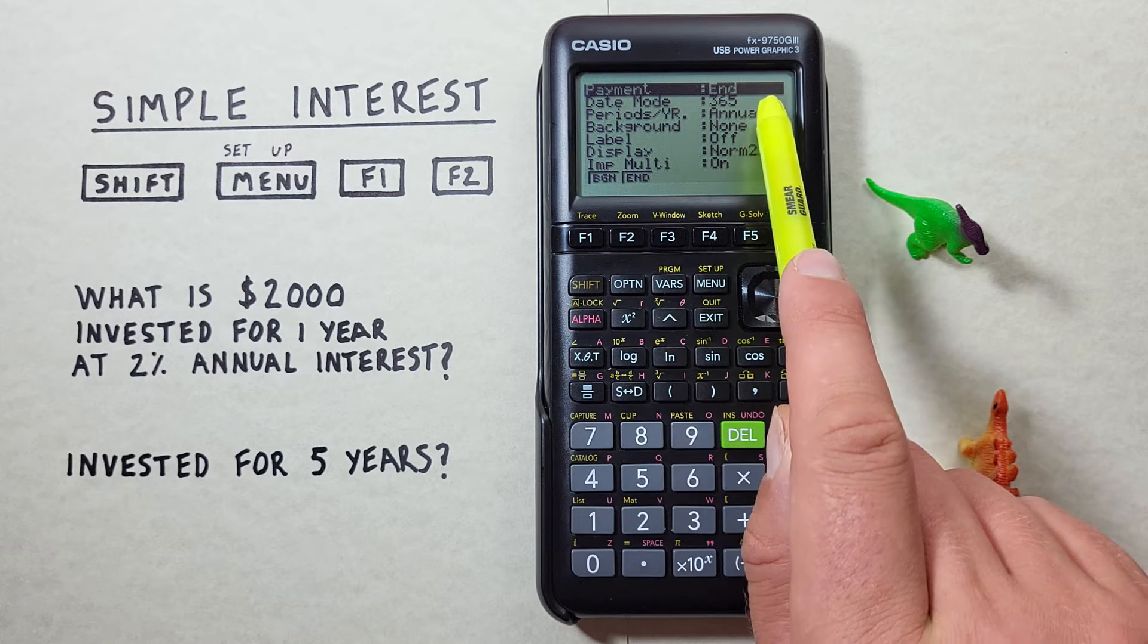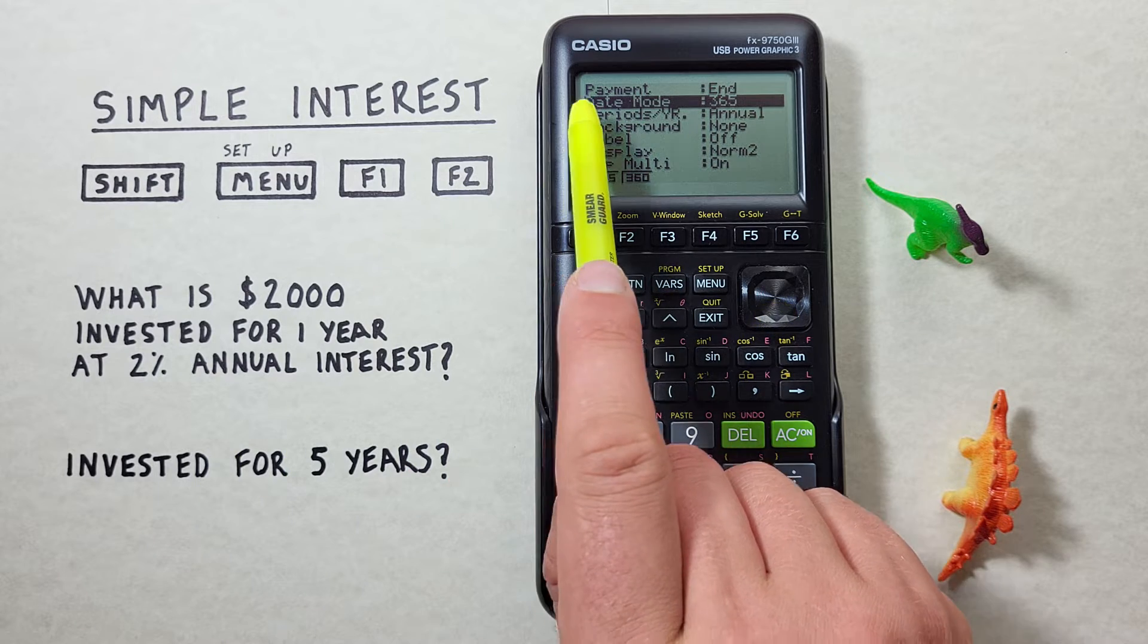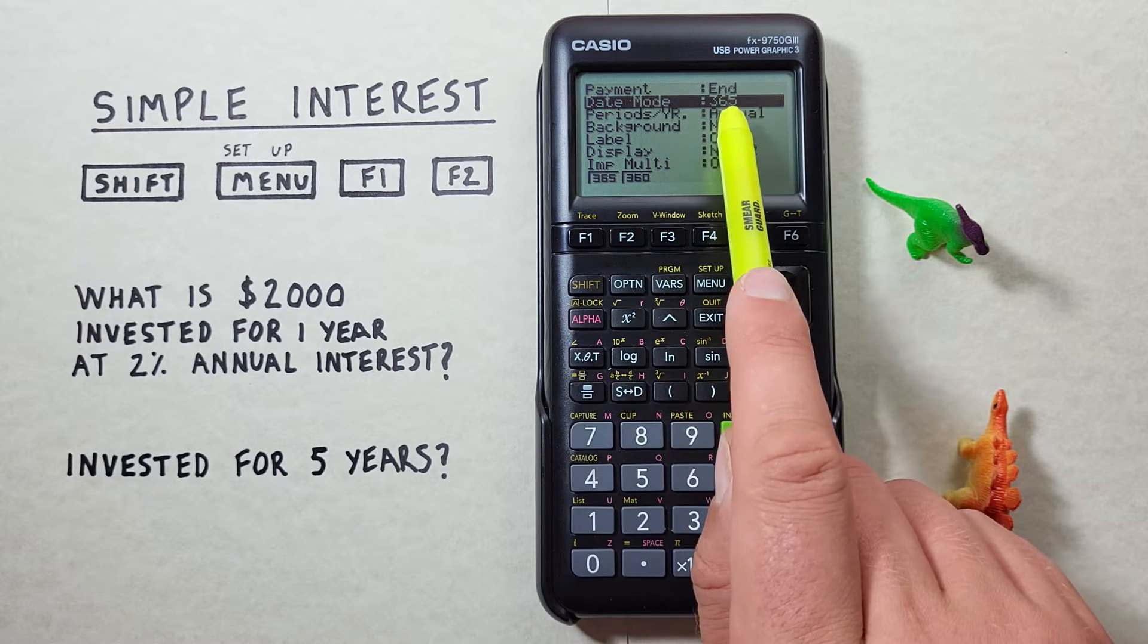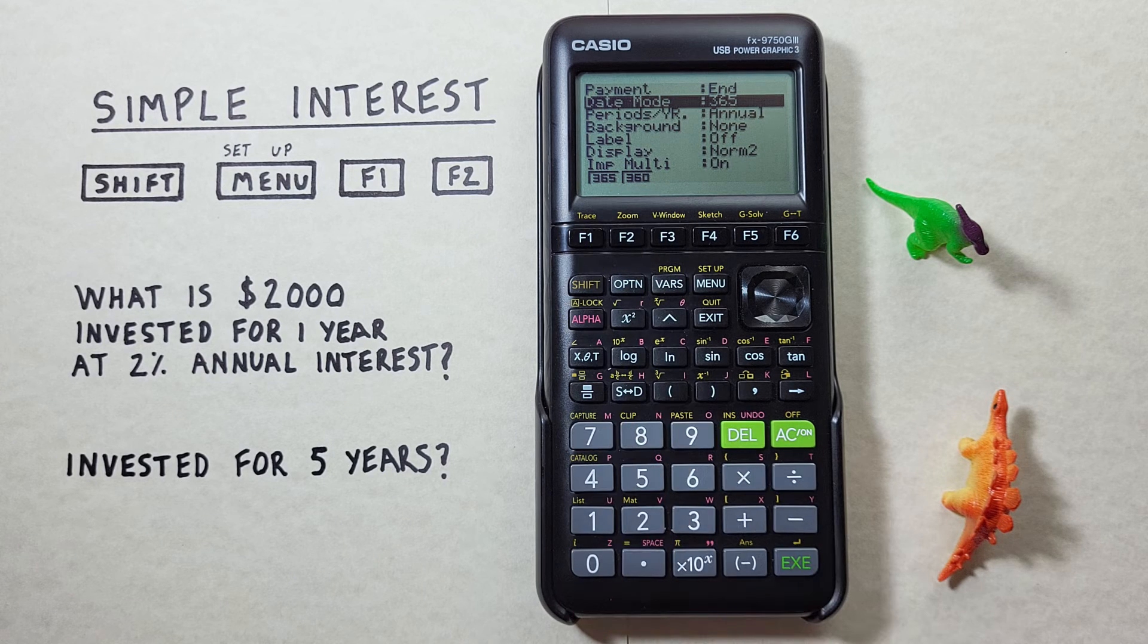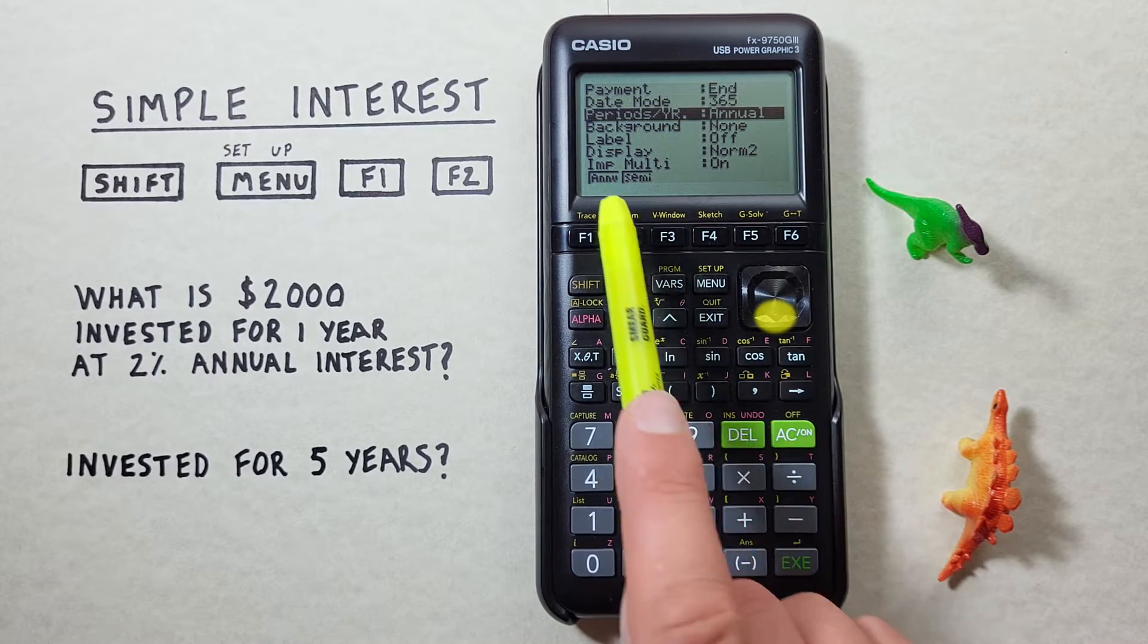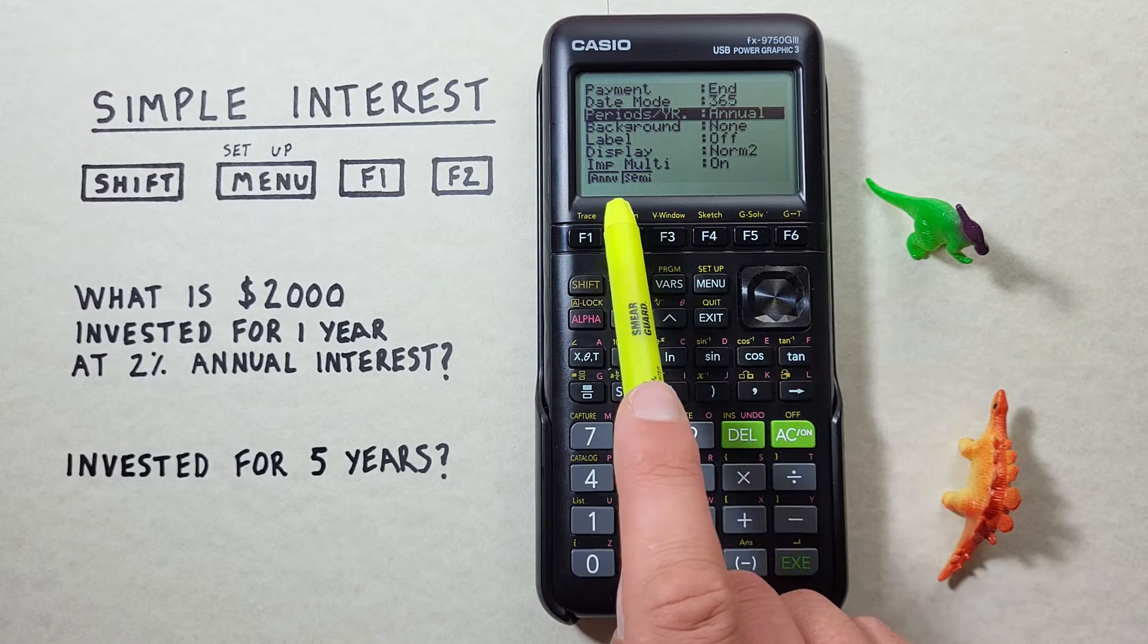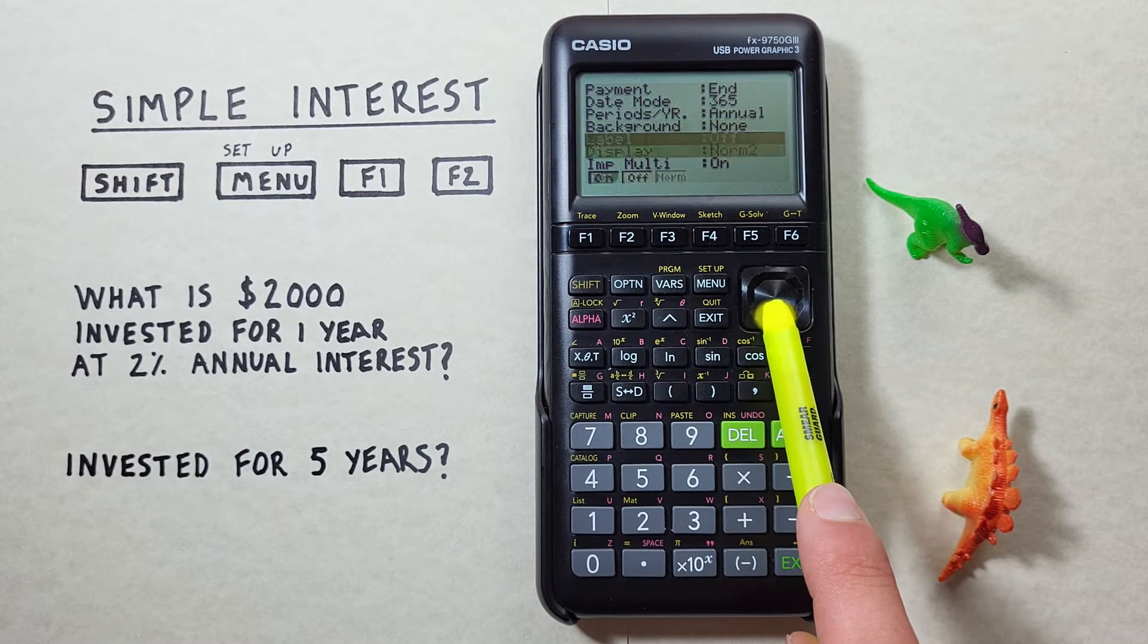We see our payment is set to end. Our date mode is set to 365. We have the option of either a 365 or 360 day year. Our pay periods is set to annual. As well as a number of other options that we don't need to worry about for this example.